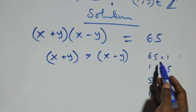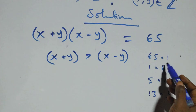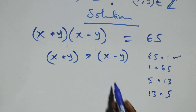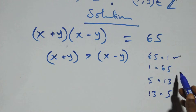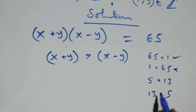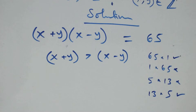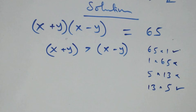From here, the first number in the bracket must be bigger than the second one. The pair 65×1 will satisfy this condition. Why? Because 65 > 1. The pair 1×65 will not satisfy, and 5×13 will also not satisfy. So we have two possible cases.